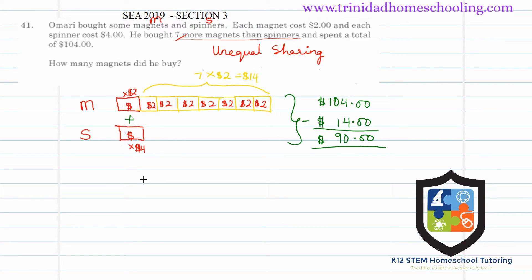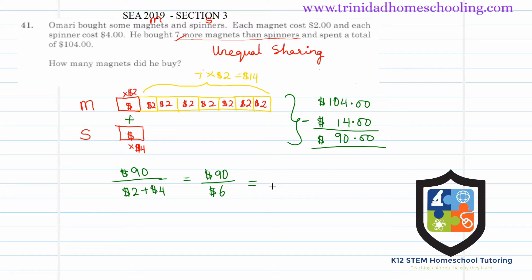This $90 represents the total cost of the equal number of magnets and the equal number of spinners. To find how many items are in each equal group, we divide $90 — not by 2 for two types of items, but by the cost of one magnet plus the cost of one spinner, which is $2 + $4 = $6. So $90 divided by $6 equals 15.